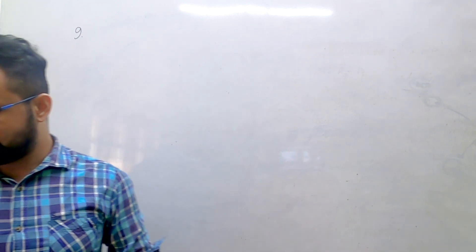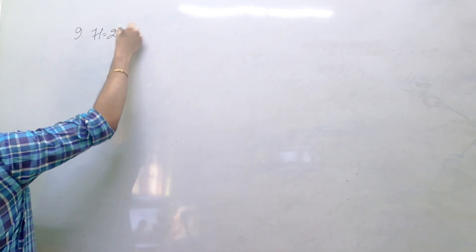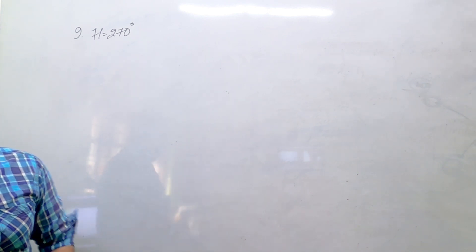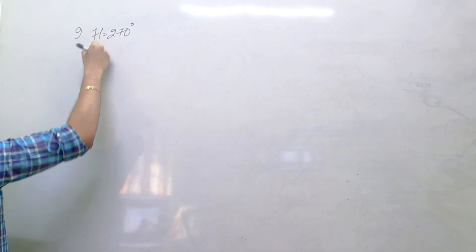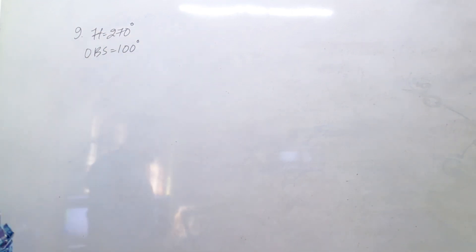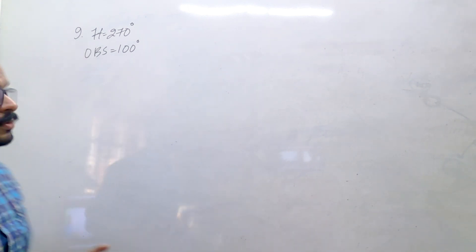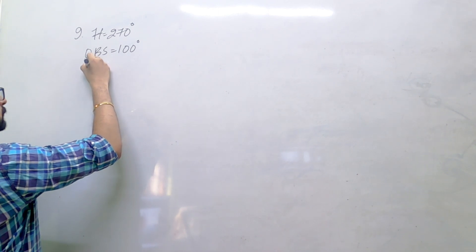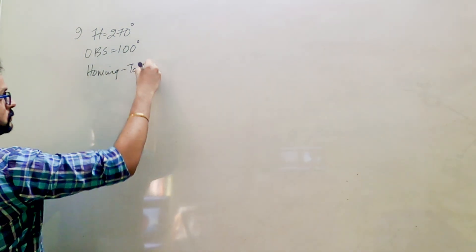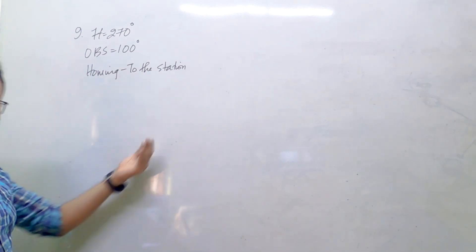The aircraft is homing onto a station on a heading of 270 degrees. The heading is 270 degrees. What is the OBS? It will be 100 degrees. You are asked to find out the CDI indication. Remember what the aircraft is doing — is it going to the station or moving away? It is homing, so it is going to the station.